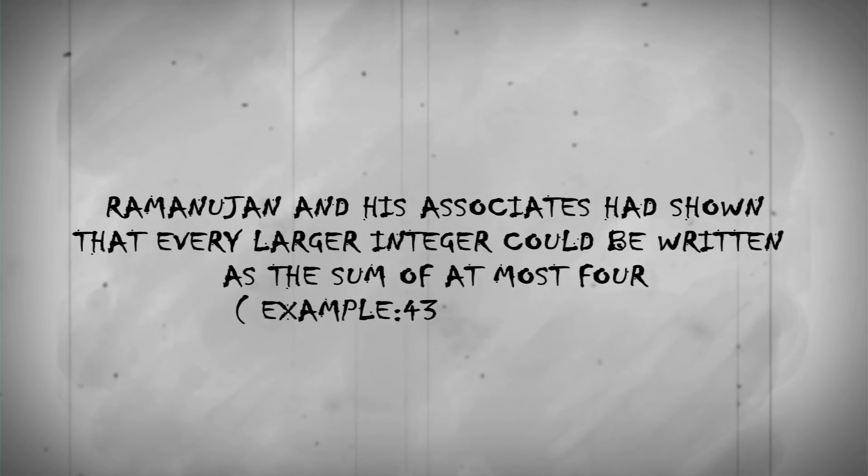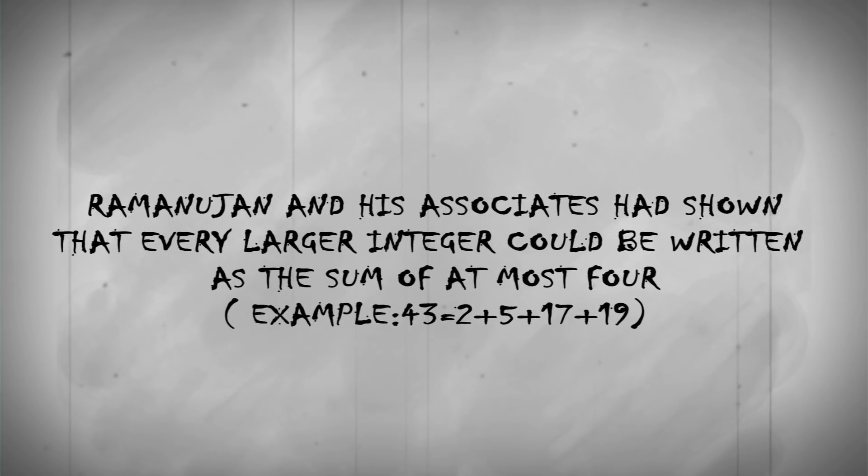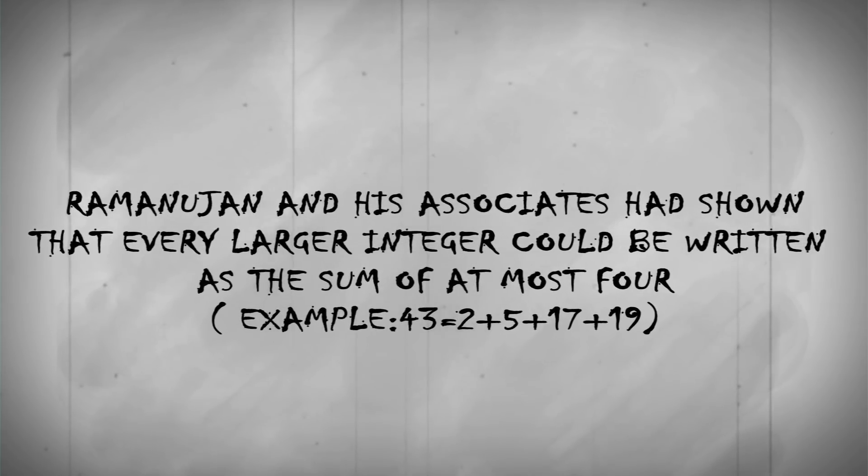Ramanujan and his associates had shown that every larger integer could be written as the sum of at most 4. For example, 43 equals 2 plus 5 plus 17 plus 19.